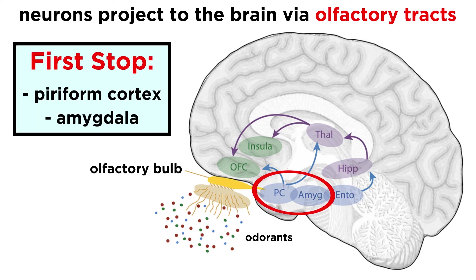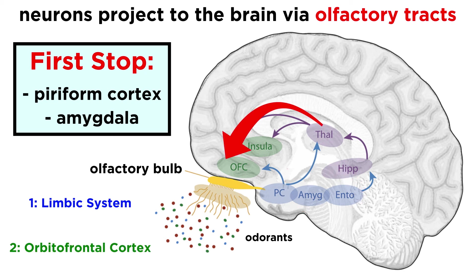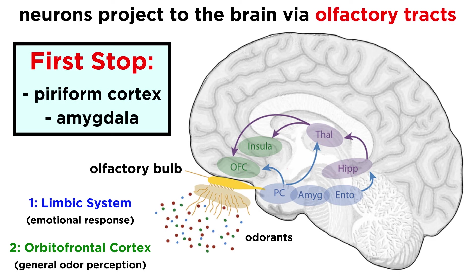Olfactory signals land in regions of the medial temporal lobes, like the amygdala and the piriform cortex. From there, some signals spread around the limbic system, and some go through the thalamus to the orbitofrontal cortex, right behind the eyes. We believe the first of these pathways regulates emotional response to odors, whereas the latter is associated with general odor perception.